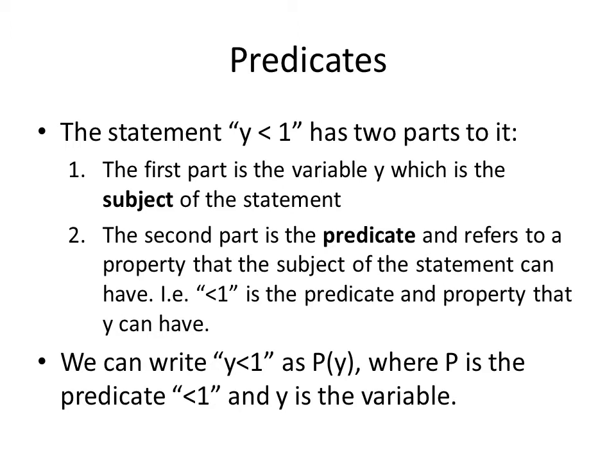First we'll be covering predicates. The statement 'Y is less than 1' has two parts to it. The first part is that the variable Y is the subject of the statement. The second part is the predicate, which refers to the property that the variable Y can have. So 'less than 1' is the predicate of the statement 'Y is less than 1'. We can write 'Y is less than 1' as P(Y), where P is the predicate 'less than 1' and Y is the variable.